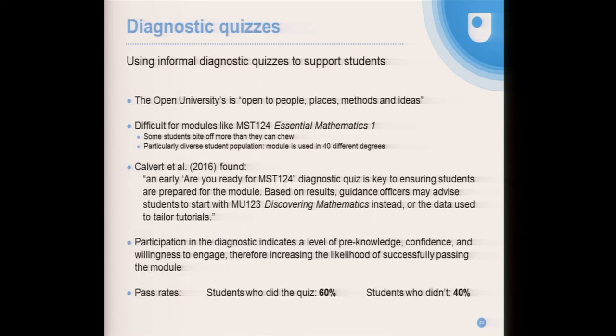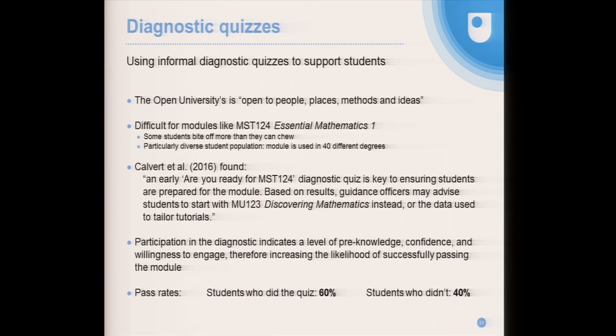Open access is absolutely fundamental to the DNA of the Open University, but the issue is how to prevent students from biting off more than they can chew. Of all the things tried, the most effective was to get students to do a diagnostic quiz before they sign up for a course, and then based on their mark, direct them to a more appropriate introductory course first. Students who did the diagnostic quiz and acted on it have about a 60% chance of passing, whereas it's 40% for students who didn't. So that's another important use of the quiz.